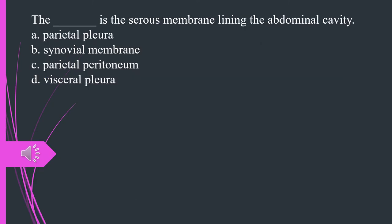What is the serous membrane lining the abdominal cavity? A. Parietal pleura. B. Synovial membrane. C. Parietal peritoneum. D. Visceral pleura. The answer is C. Parietal peritoneum.